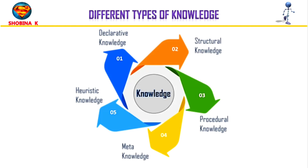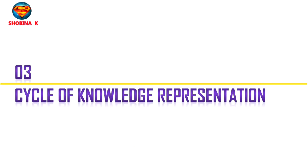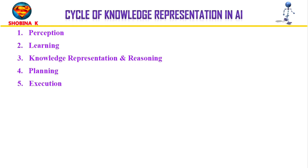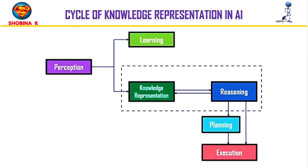Now let's see the cycle of knowledge representation and how it actually works. AI systems usually consist of various components to display intelligent behavior. These components include perception, learning, knowledge representation and reasoning, planning, and finally execution. This diagram shows the interaction of an AI system with the real world and the components involved in showing intelligence.